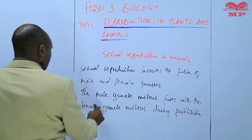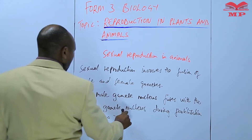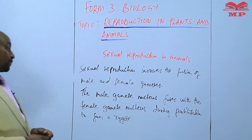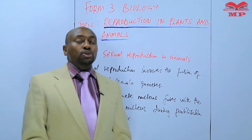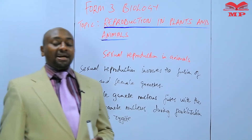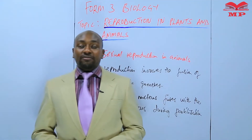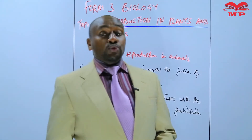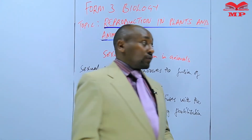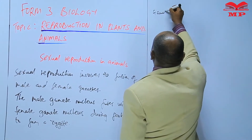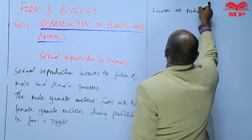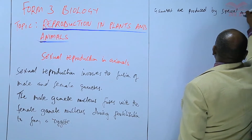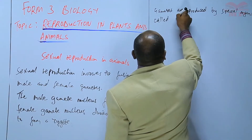The fusion of the male and female gamete nuclei results in the formation of a zygote. It is also important to note that gametes are produced by certain organs in our bodies, and those organs we refer to as gonads. We have male gonads and female gonads.